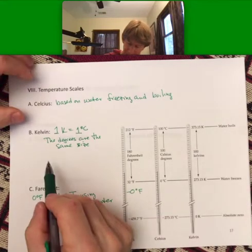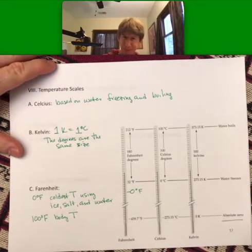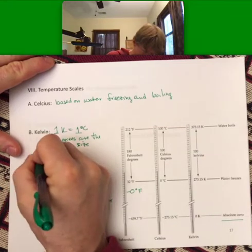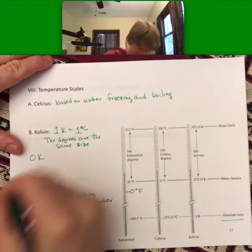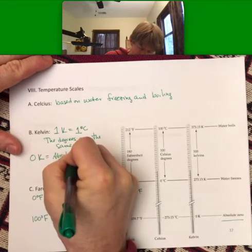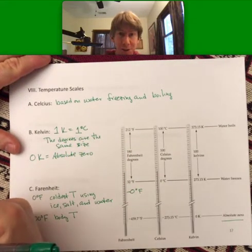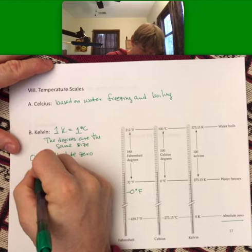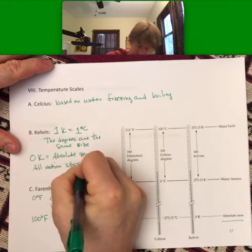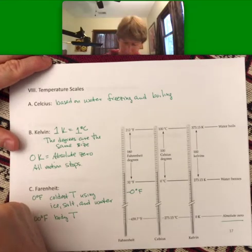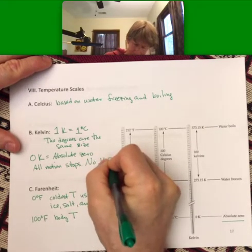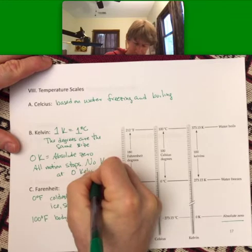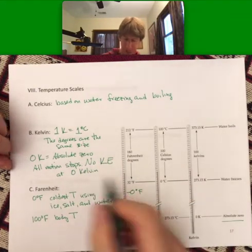Zero Kelvin is absolute zero — the coldest temperature possible. In fact, we can't actually achieve it; it is a limit. At absolute zero, all motion stops — there is no kinetic energy at zero Kelvin. Sometimes it looks like 'OK,' so I like to write out the Kelvin part to be clear.